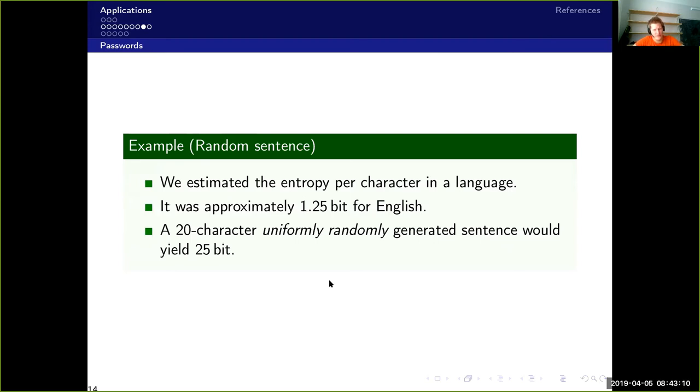Now the final example where we will cover here is to generate a random sentence. So you remember from the example from Shannon that he estimated that the entropy per character in the English language was approximately 1.25 bits. So if we generate a completely random but still valid sentence in English, which is 20 characters long, then that would yield only 25 bits of entropy. So that's quite weak, easily to guess, since a lot of options are canceled because they are grammatically incorrect and so on.